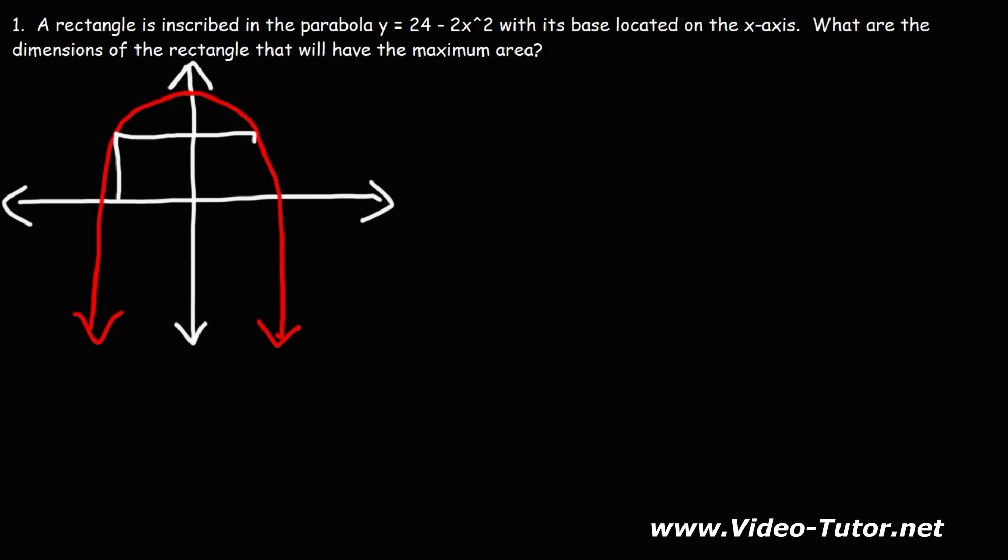We have a rectangle inscribed inside of this parabola, and the base is going to be on the x-axis. The distance between the origin and this point, that's going to be x. The height of the rectangle, which is basically the height of the curve, that's going to be y. And we have a function that relates y to x, and it's y equals 24 minus 2x squared.